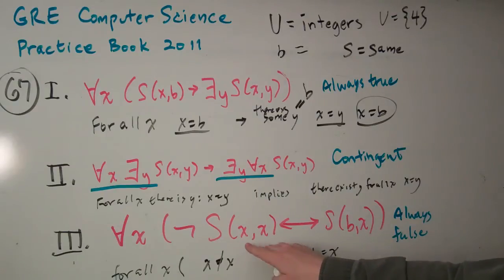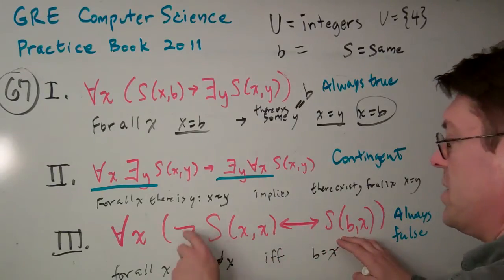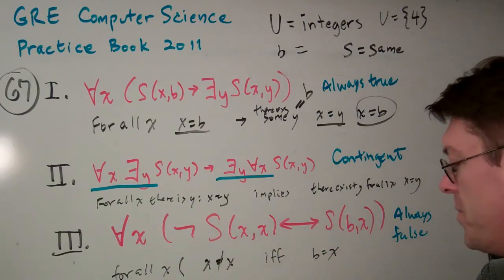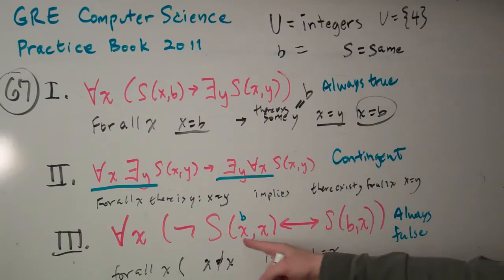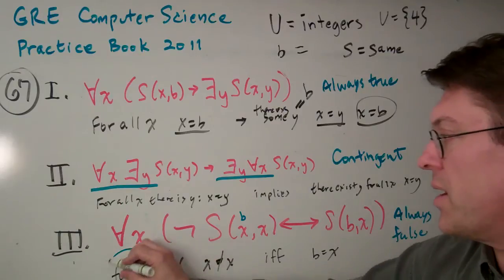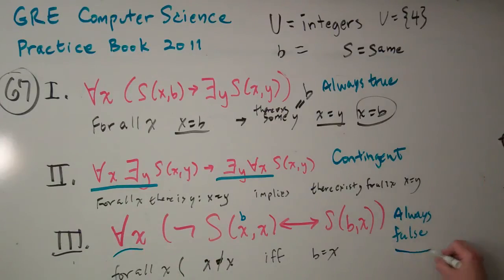So, like, for example, if X was B, then it wouldn't be true for all X. So there's your answer there.